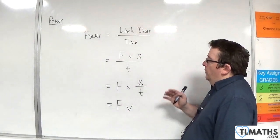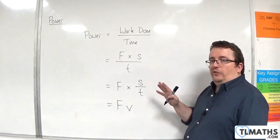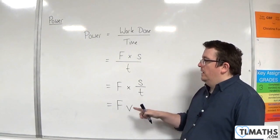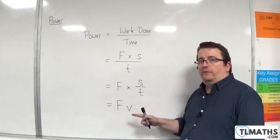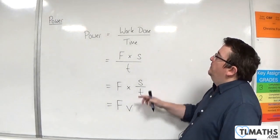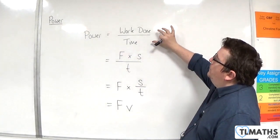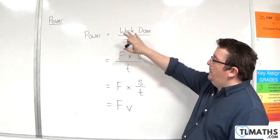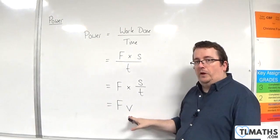Now, to be clear, this is the power that is being produced at the time that the object has that velocity. So, you can use these two formulae: power is work done over time, and power is force times velocity.